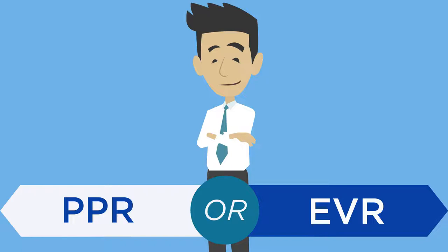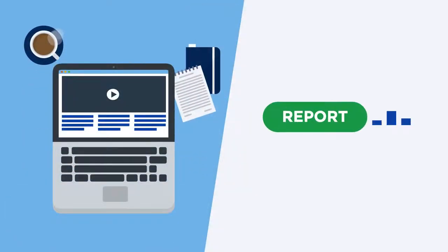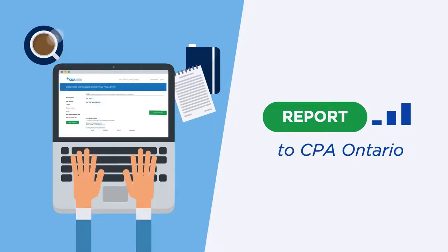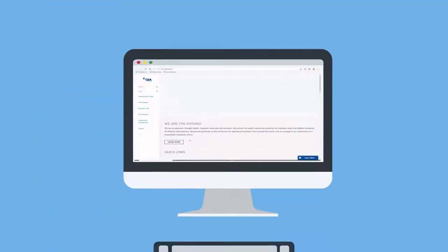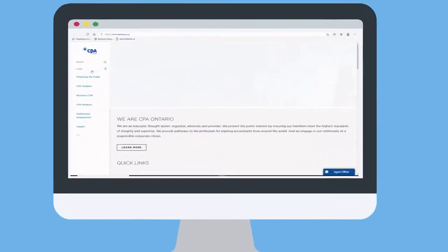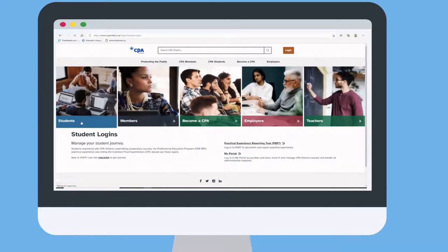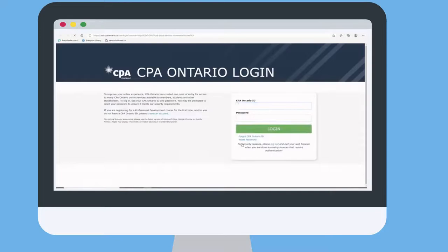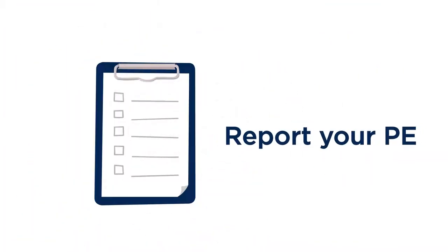Hey there! Now that you have selected your preferred route, it's time to tell you how to report the progress of your practical experience to CPA Ontario. You must report your PE through the online tool called PERT. Immediately after you register as a CPA Ontario student, you should log in to PERT and set your PER start date. This step is very important as it enables you to start reporting your PE.